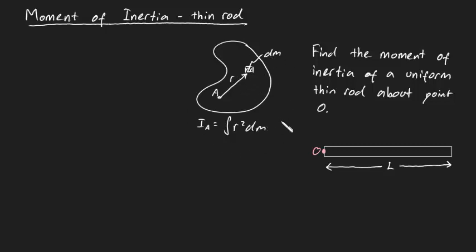So now let's find out what r is and what dm is in the context of this problem. Well, to do that, let me quickly redraw our thin rod. The first thing we're going to note is that we're assuming that the rod is so thin that it can be approximated as just a line. And this means that we're going to be dealing with a one-dimensional object and not a two-dimensional object.